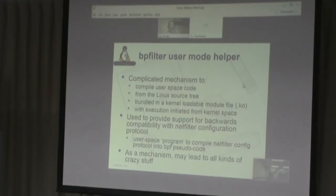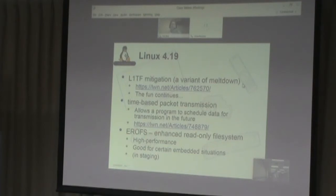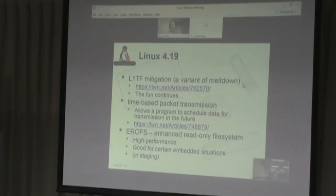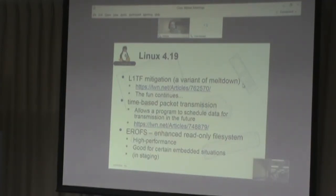In 4.19, some of the big things were the L1TF mitigation. This is a variant of Meltdown, which involves speculative execution security vulnerabilities. There are so many speculative execution vulnerabilities that I kind of stopped keeping track — it seems like every kernel version has a couple of new mitigations. So this is the gift that keeps on giving.